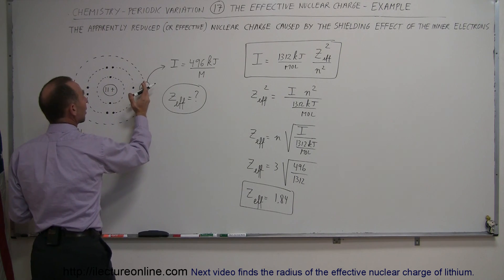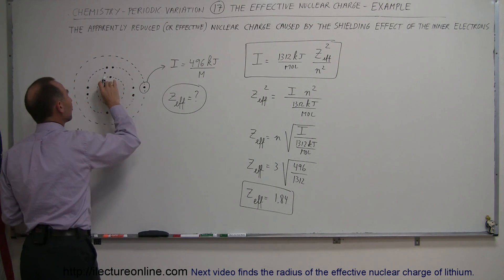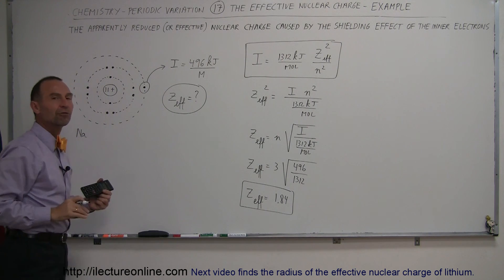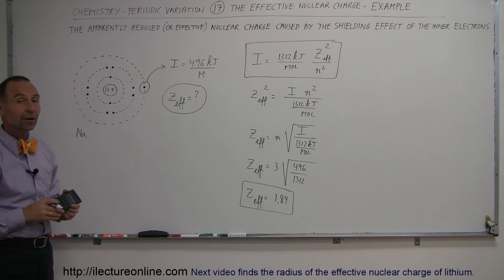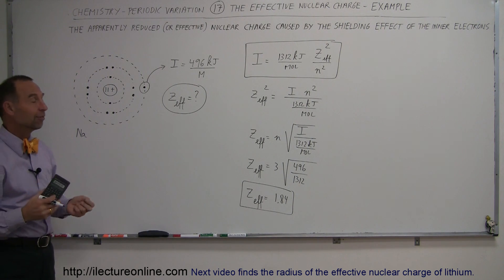And that is why a sodium atom is so big, because the orbit of this 11th electron is so far away from the center because it feels so little traction from the center charge of the nucleus. And hopefully, that gives you a good idea of what we mean by Z-effective.